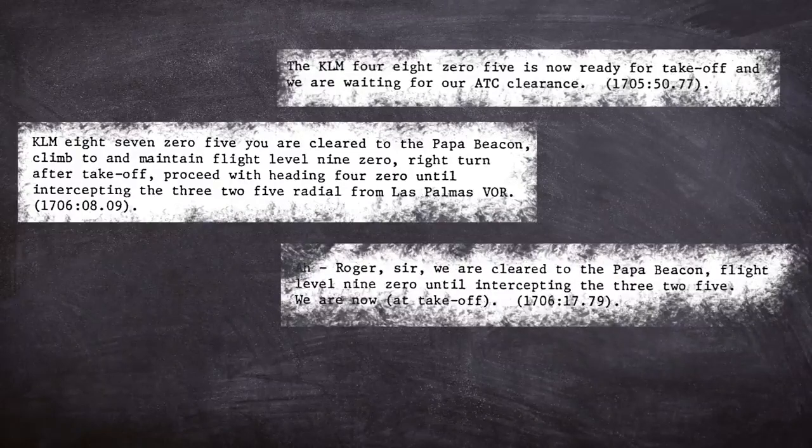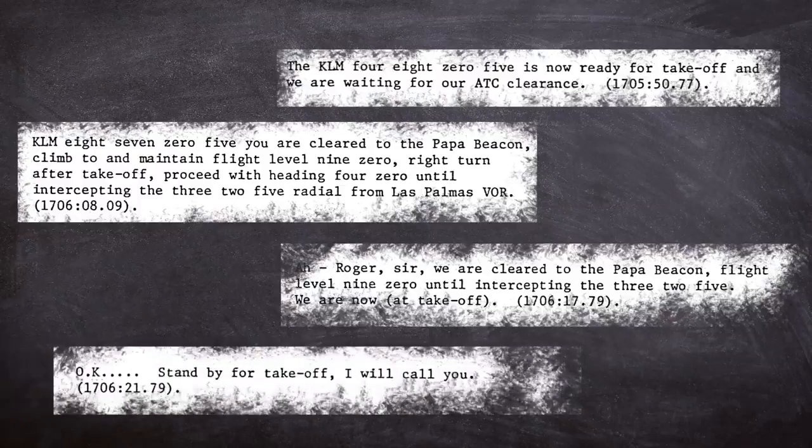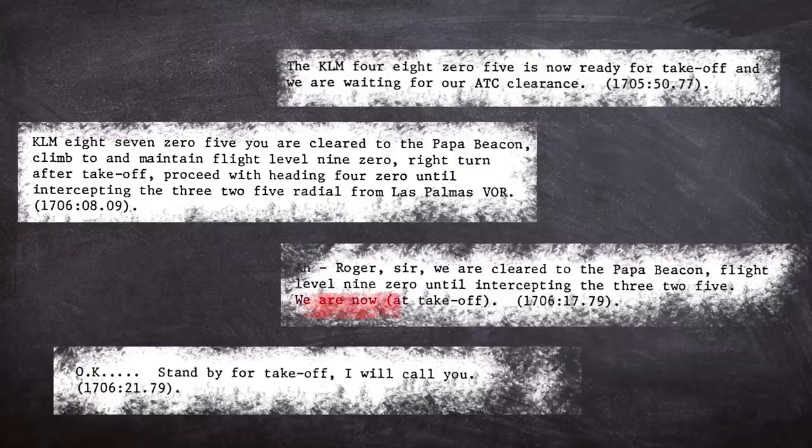The second part of the control towers message was to stand by for take off clearance, which was continued by OK followed on with a two second gap ending with the message I will call you back. Captain Van Zanten took power halfway through the readback of the first officer in the assumption that the authority had been given, which was further reinforced by hearing the word OK.